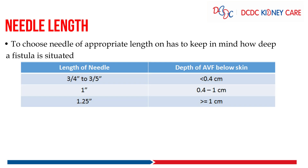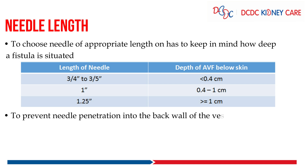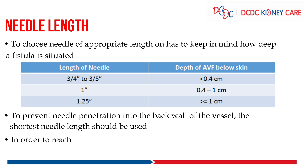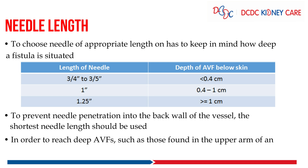The third attribute is needle length. The choice of needle length depends on the depth of the fistula — how deep a fistula is situated. Generally, AV fistulas are situated at a depth of 0.4 to 1 cm, and for that we use a needle of 1 inch in length. To prevent back penetration of the needle into the vessel, the shortest needle should be used for superficial fistulas. For fistulas situated at a depth of more than 1 cm, a needle length of 1.25 inches should be used.